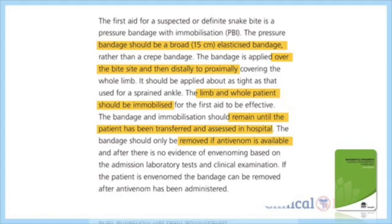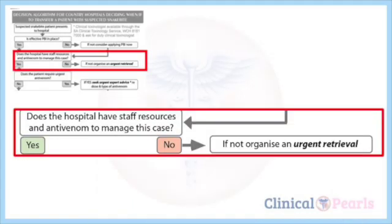PBI, or pressure bandage with immobilization: proper PBI should be a broad elasticized bandage, not a crepe bandage. The bandage is applied over the bite site and then distally to proximally, covering the whole limb. The limb and whole patient should be immobilized for the first aid to be effective. This should remain until the patient has been transferred and assessed in hospital. The bandage should only be removed if antivenom is available and after there is no evidence of envenoming based on admission laboratory tests and clinical examination.